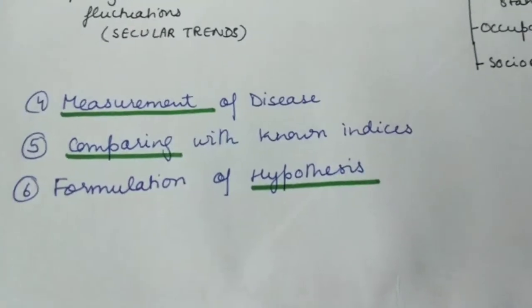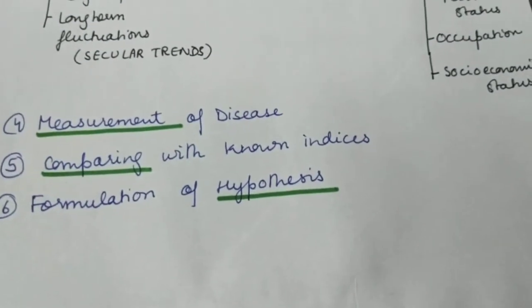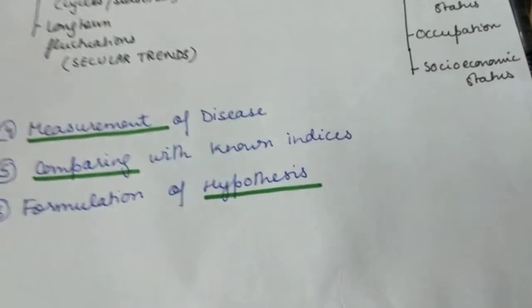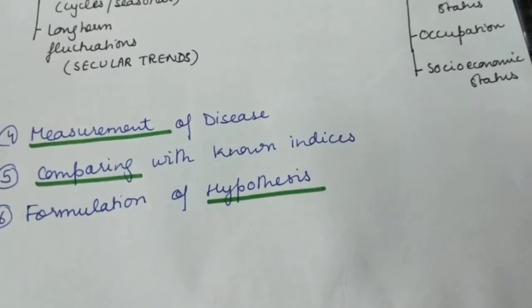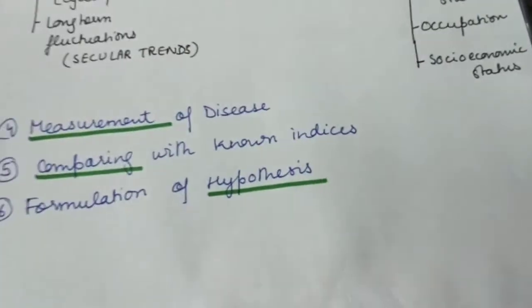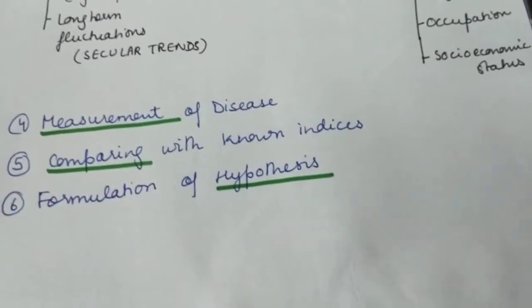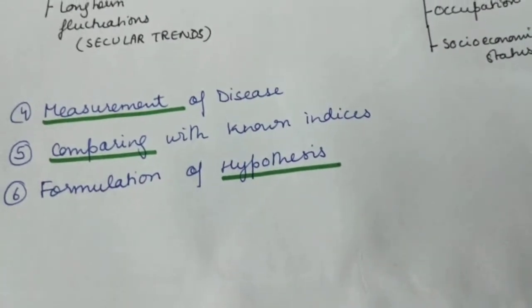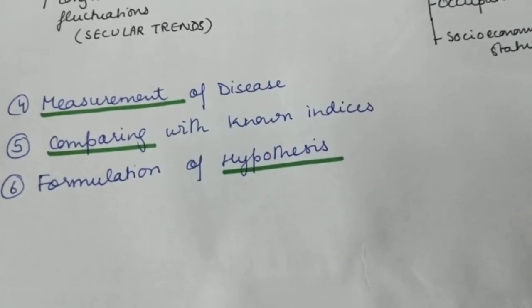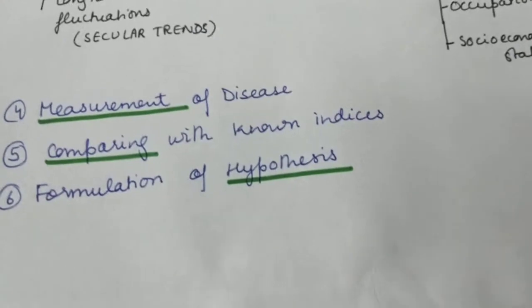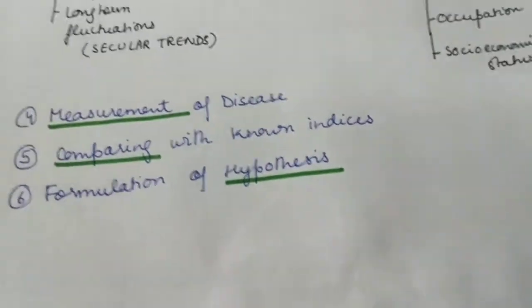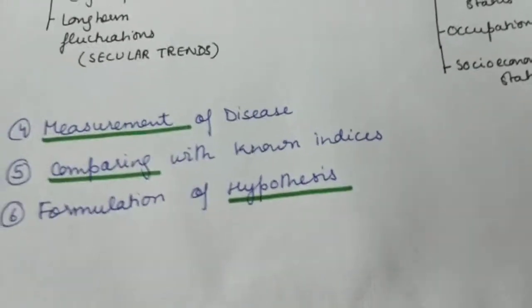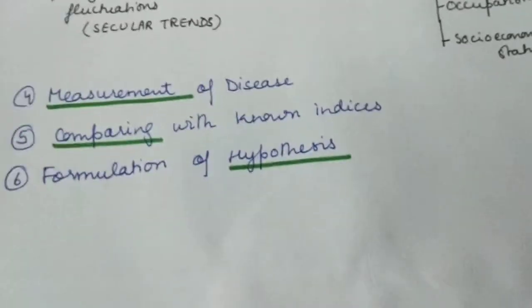The next step is the measurement of the disease. Descriptive epidemiology may use a cross-sectional study or a longitudinal study to obtain estimates of the magnitude of health and disease problems in a human population. Once you have described the disease, you can proceed to cross-sectional methods and then measure the results you have obtained.